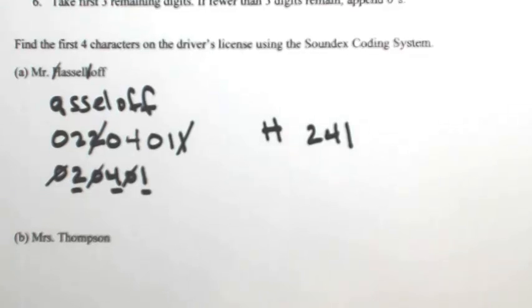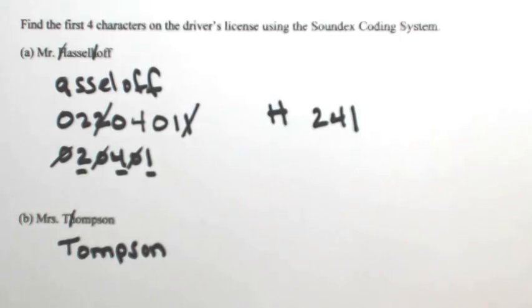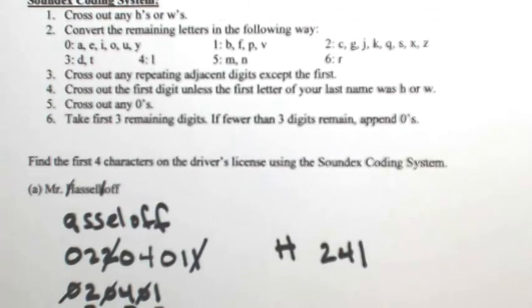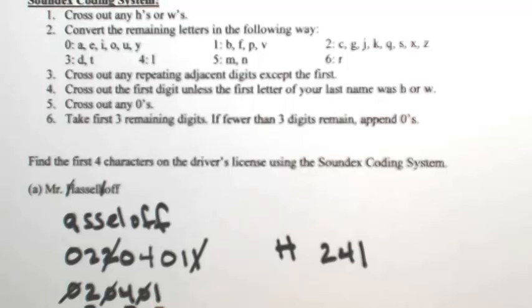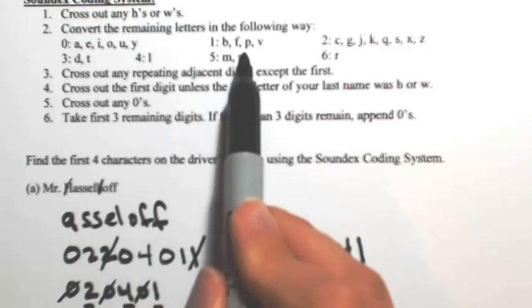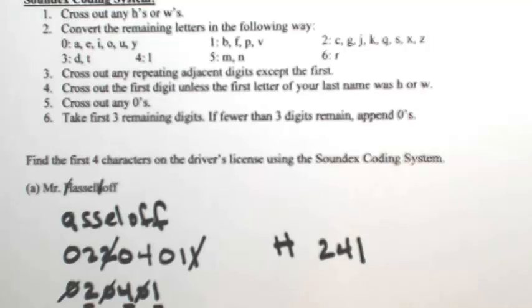Let's look at another last name. Let's try Thompson. And we'll do the same thing. Start by crossing out any H's or W's. So the last name that's going to get encoded is Thompson without the H. Then according to our key, the T is going to be a three. All the vowels are zeros. The M is a five. P is a one. S is a two. O is a zero, and the N is a five.